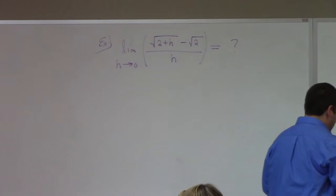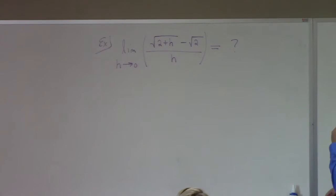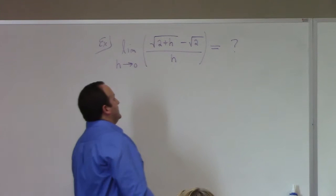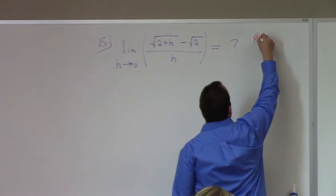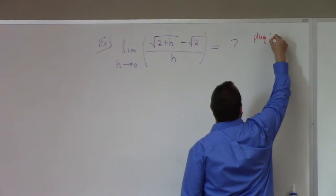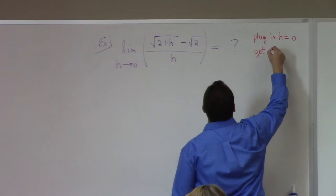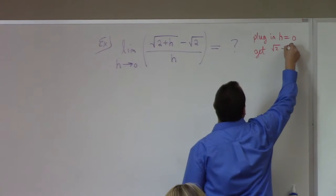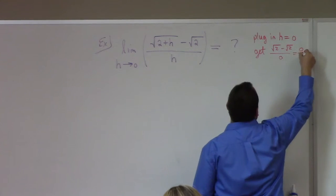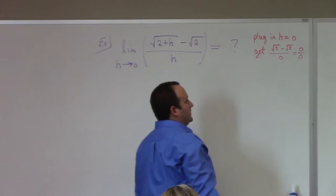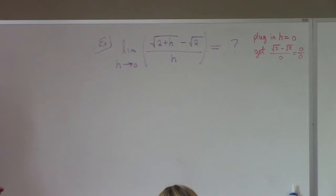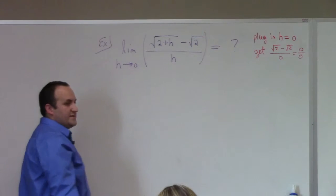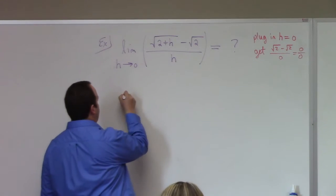Okay so this is another problem, kind of standard type problem. What happens when you plug in h equal to 0? We get square root of 2 minus square root of 2 over 0. Zero over zero. Uh oh, this means we're not done. This means we need to do algebra to resolve the limit.